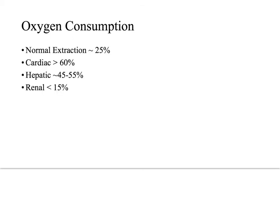As just discussed, the normal oxygen extraction to the body is about 25%. However, certain organs take up more oxygen than others. For example, the heart uses 60% of the oxygen delivered to it, the liver uses between 45% and 55% of delivered oxygen, and the kidneys only use about 15% of the oxygen they receive.